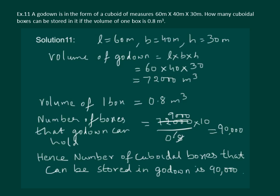Hence, in the answer we will write that number of cuboidal boxes that can be stored in godown is 90,000.